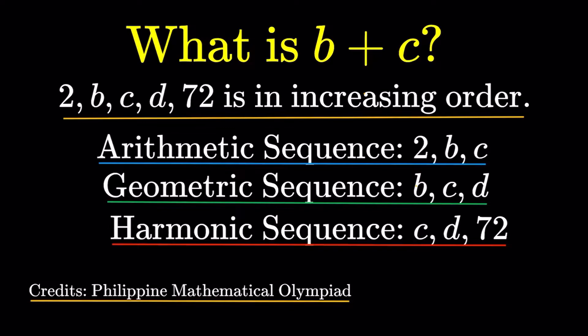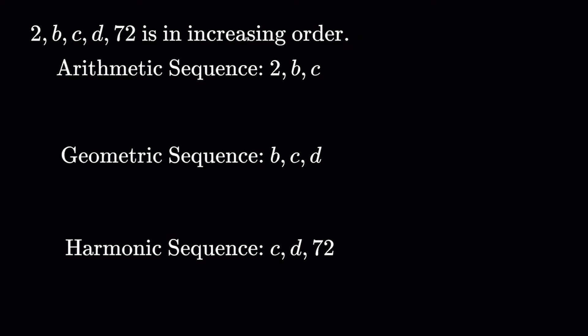All right, we do have four things here, four statements, and we should be able to translate each of these four statements into its corresponding mathematical equation or expression. Okay, let's talk about the first one. I think it's straightforward. That sequence being in increasing order, that's going to tell us that 2 is less than B is less than C is less than D is less than 72.